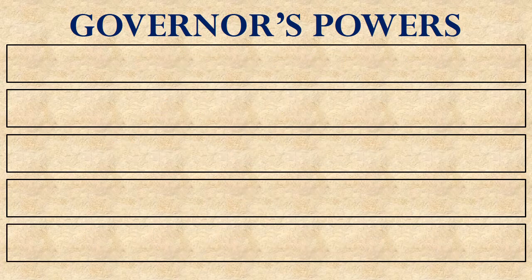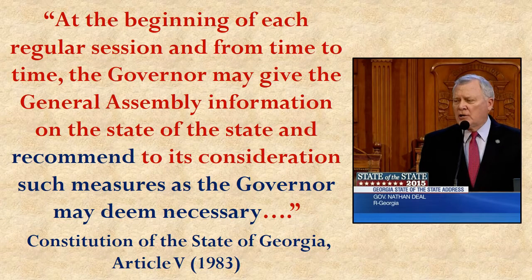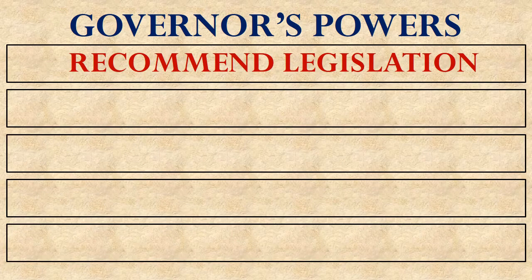Now let's fill in the other five of the governor's ten powers. The next power he's given is that he can recommend measures — legislative ideas — to the General Assembly. He's told that he should regularly give a speech about the state of the state, and as part of that he should make recommendations. This is an informal power that the President of the United States uses during State of the Union addresses, but it is an officially recognized duty of the governor in the state of Georgia. So the sixth power is to recommend legislation.